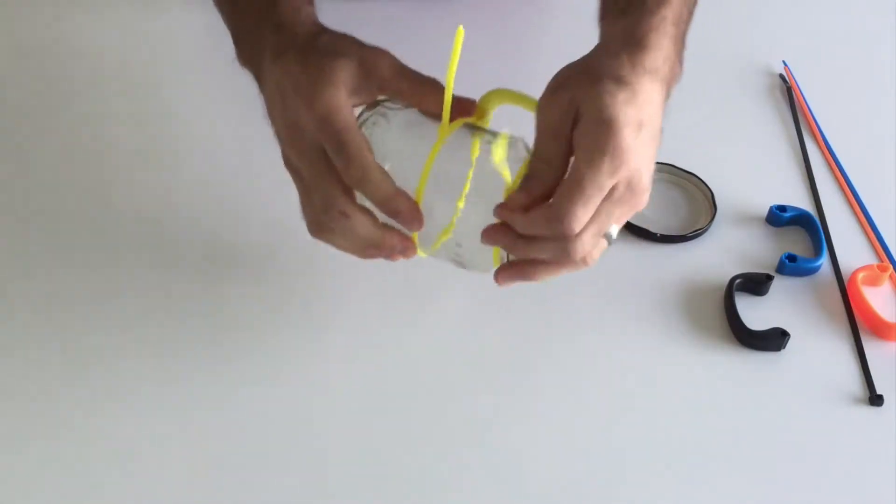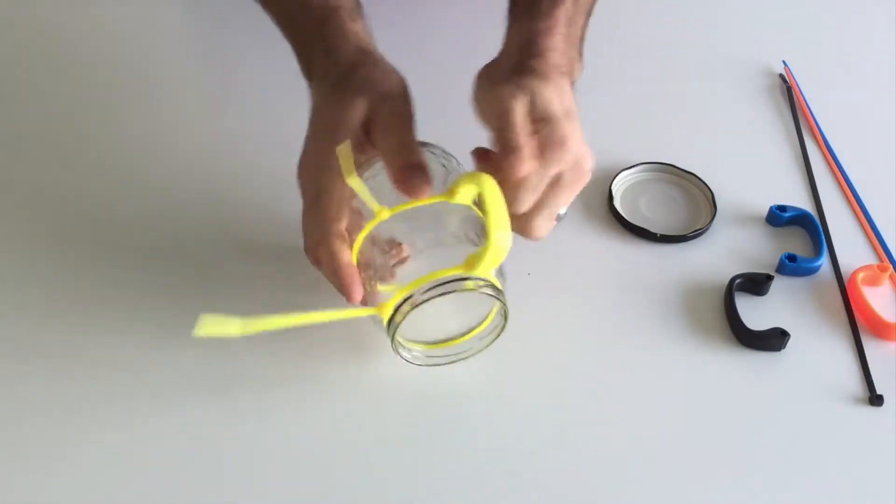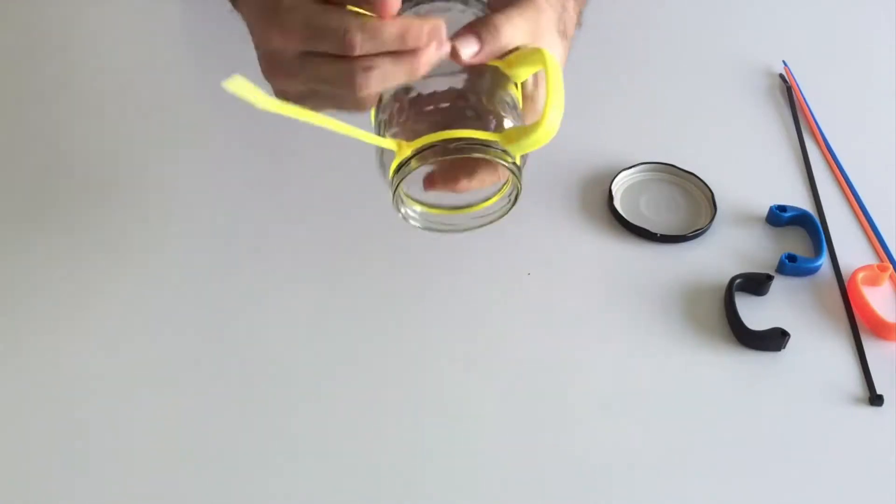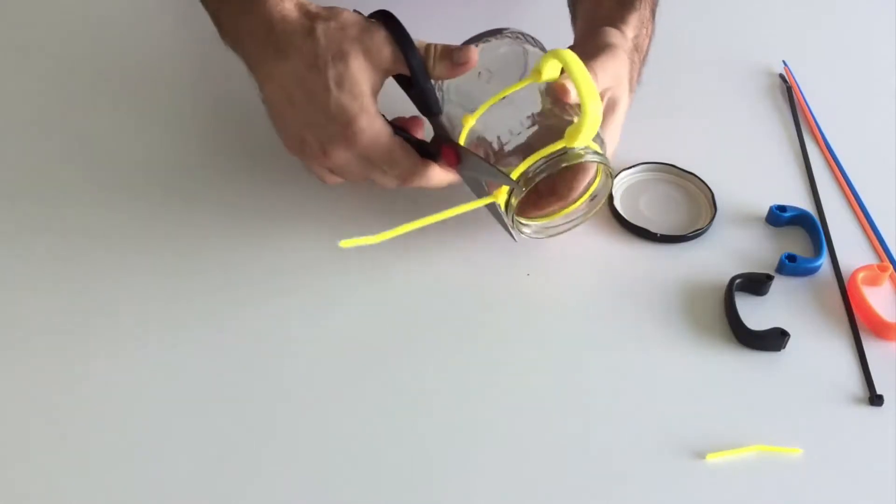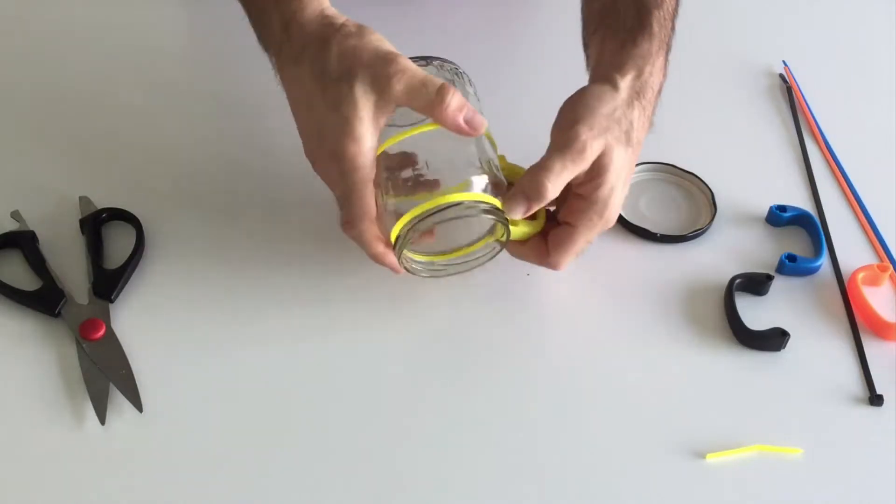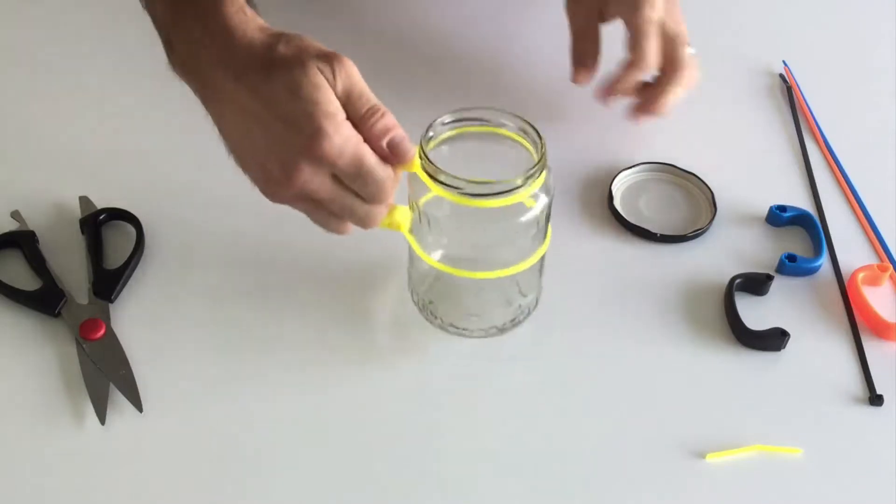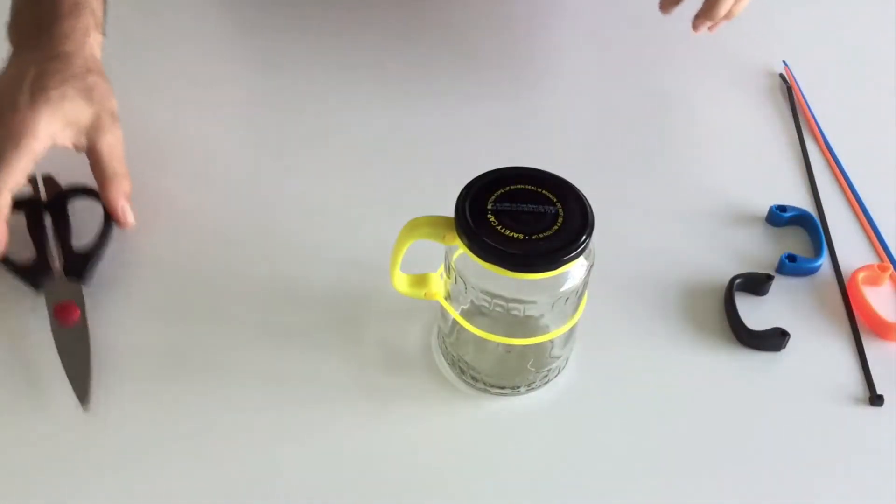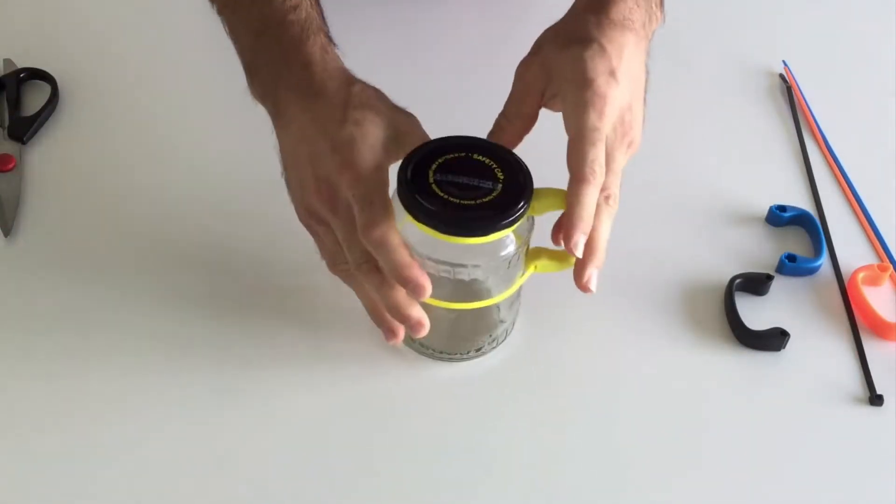You always want to pull these as tight as you can, you can make sure that it's good and tight, yeah, and then common scissors, just trim that like that, snip snip. There you go. You've got yourself a jar handle mug with lid, not too shabby.